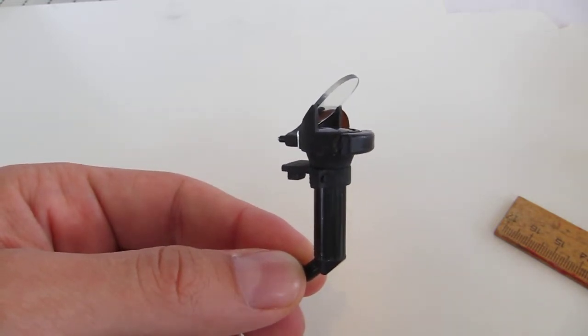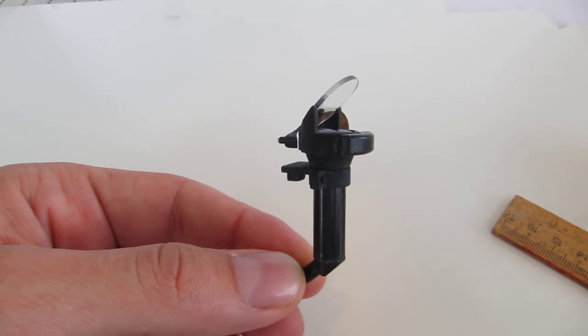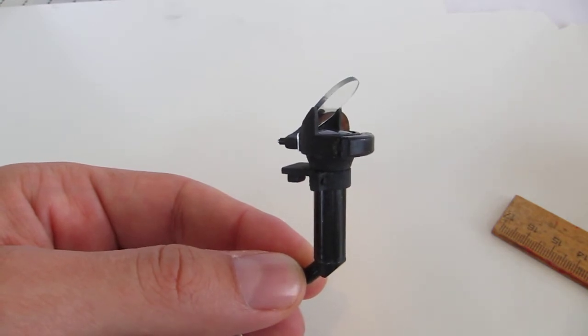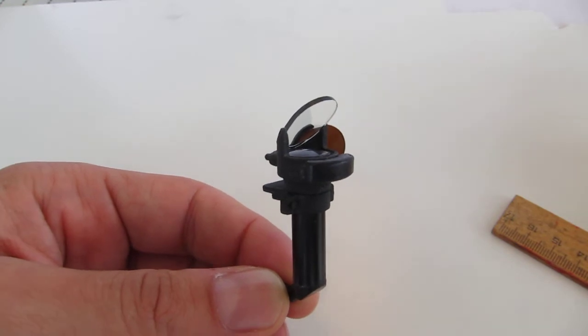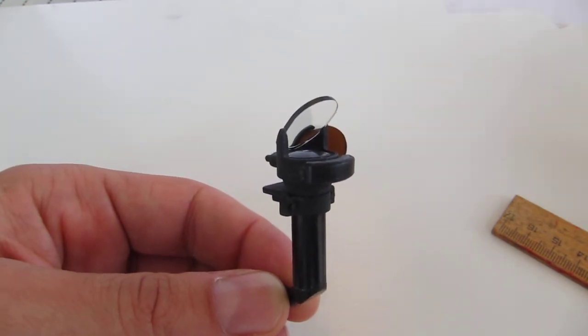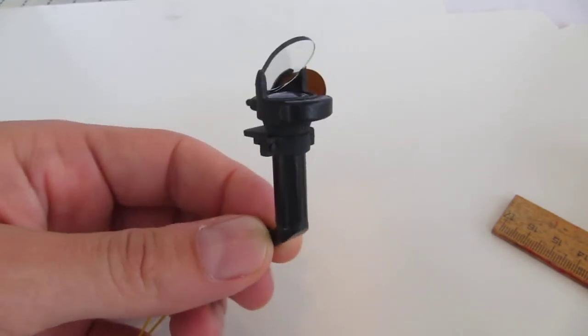You can use it for the Corsair, for the P-47, for the Spitfire, for the Hurricane. Actually the British Mark 2 gunsight which was used in the Hurricane and the Spitfire is quite similar to the American Mark 8, so you can use it for both British and American planes.